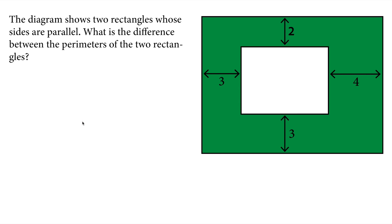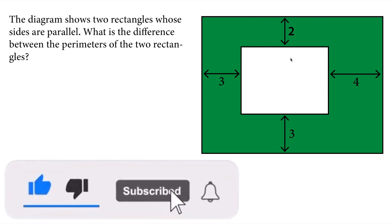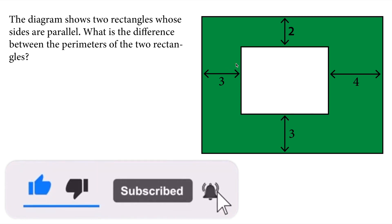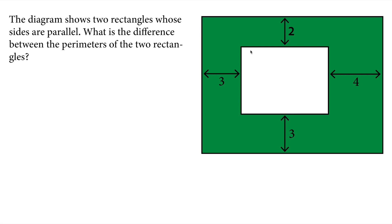Hello everyone. In this video we will solve a geometric question. The diagram shows two rectangles whose sides are parallel. We want to find the difference between the perimeters of the two rectangles. The side lengths are not given directly — we only see the differences in the side lengths of the small and big rectangle.